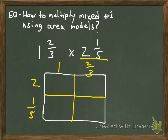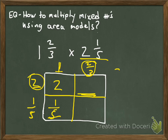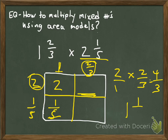I take this 2 and multiply it by 1, and 2 times 1 is 2. To figure out the next section, I multiply 1 times ⅕, which gives a product of ⅕. For the next section, I take ⅔ and multiply it by 2. I multiply 2 times ⅔ and get 4/3, which as a mixed number equals 1 and ⅓.